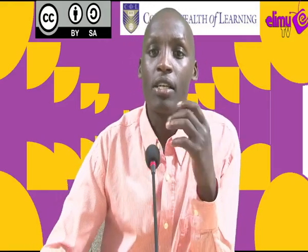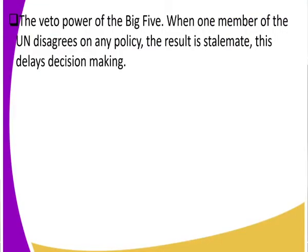Another challenge is the veto power of the Big Five. The Big Five are the USA, China, Russia, Britain, and France. If one member does not agree with a certain decision, they can block it, meaning if one says yes and the others disagree, they cannot make a resolution. This veto power has delayed the decision-making process of the United Nations.